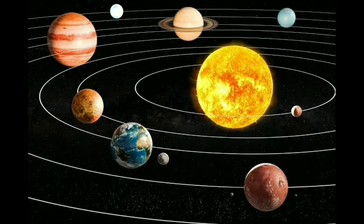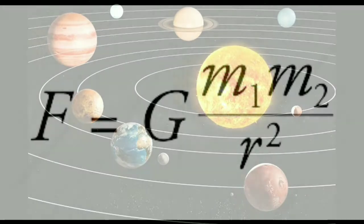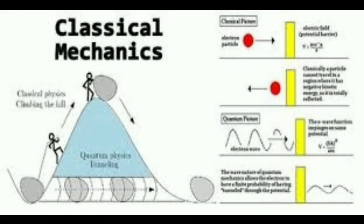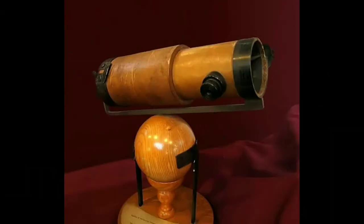In Newton's Principia, his theory of gravity helps to understand the motion of Earth, the moon, and other planets around the sun. Today this is known as Newton's law of universal gravitation. Newton's laws of motion are known as the fundamental laws of physics and laid the new foundation for the branch of physics called classical mechanics.